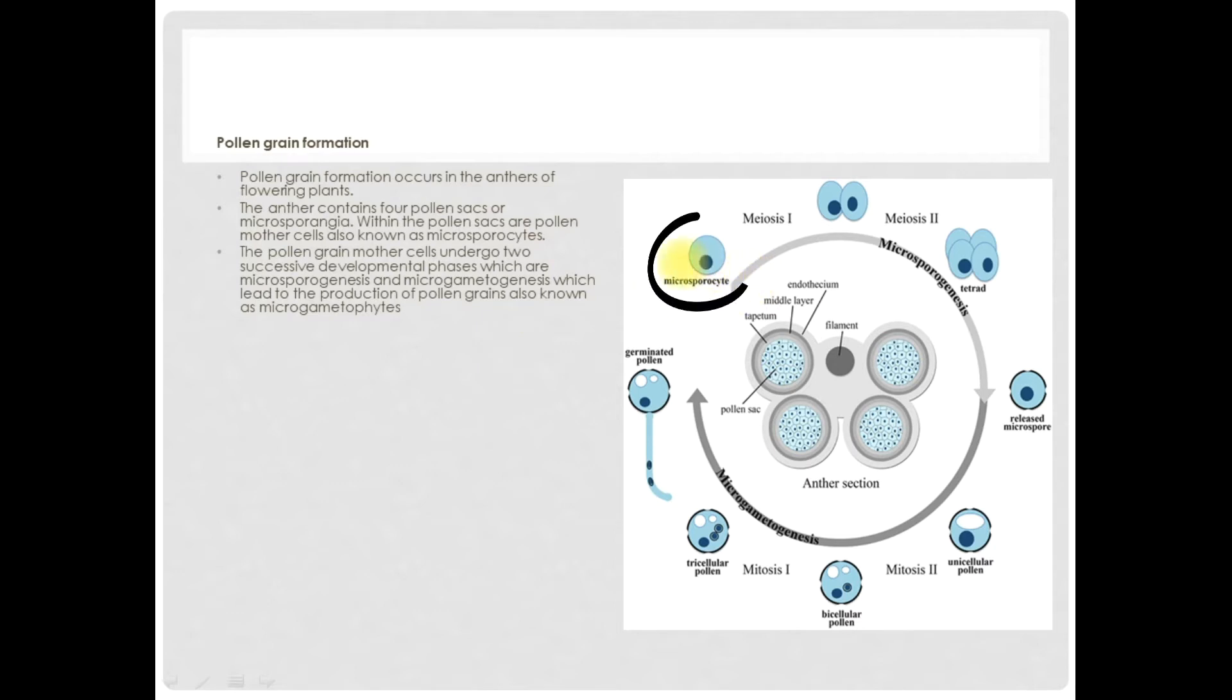This microsporocyte undergoes two developmental phases: microsporogenesis and microgametogenesis. During microsporogenesis, there is the production of microspores. The microsporocyte undergoes two meiotic divisions, first meiosis and second meiosis, and it forms four microspores which are known as tetrads. These microspores then further develop into a mature pollen grain.